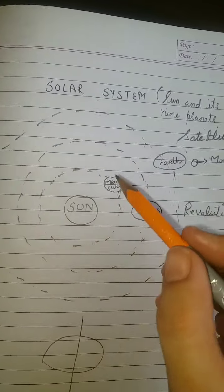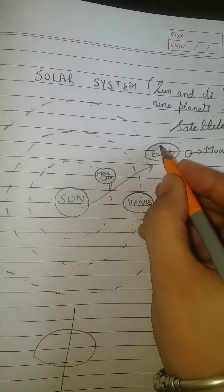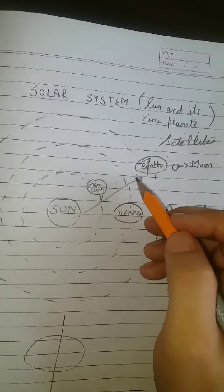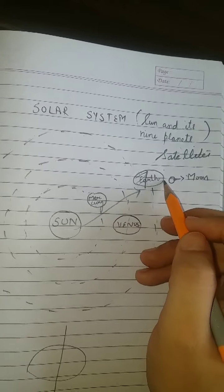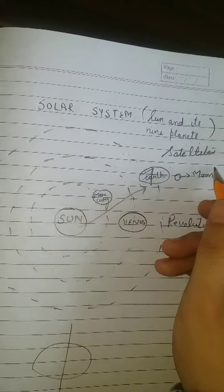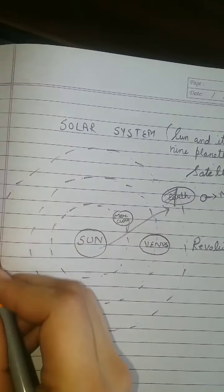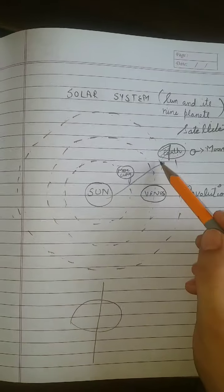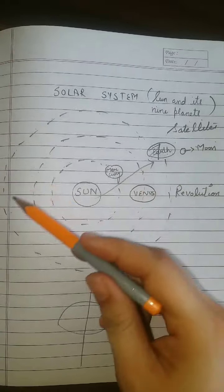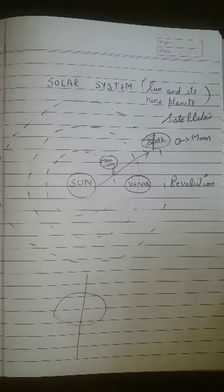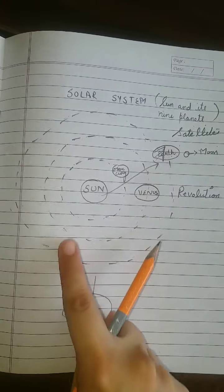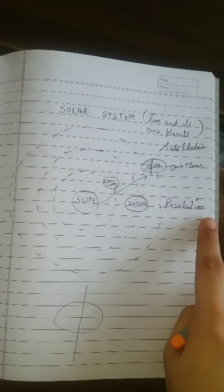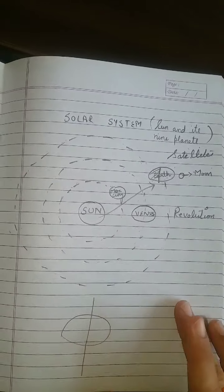जब Earth ऐसे move करेगी — अगर Earth यहाँ पर है, तो sun की light इस portion पर पड़ रही है। जहाँ light ज्यादा पड़ेगी, वहाँ heat भी ज्यादा होगी — उस portion में summer season होगा। लेकिन दूसरे portion में इतनी light और heat नहीं पहुँचेगी, तो वहाँ winter season होगा। जब Earth यहाँ से move करते हुए दूसरी side आएगी, तो वहाँ summer और दूसरी side में winter होगा। So, जब Earth sun के round घूमती है, उस motion को revolution बोलते हैं, और revolution के कारण seasons बनते हैं।